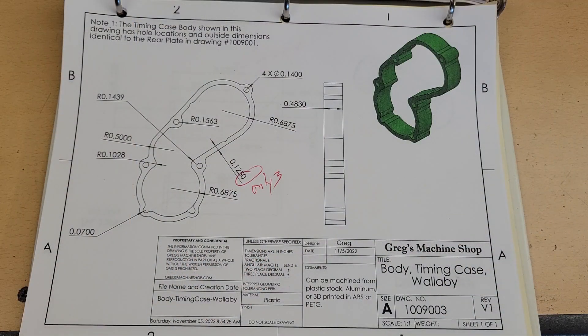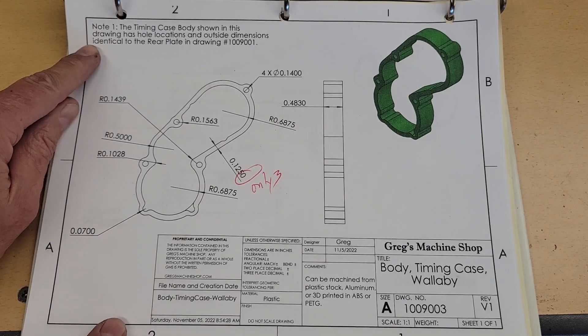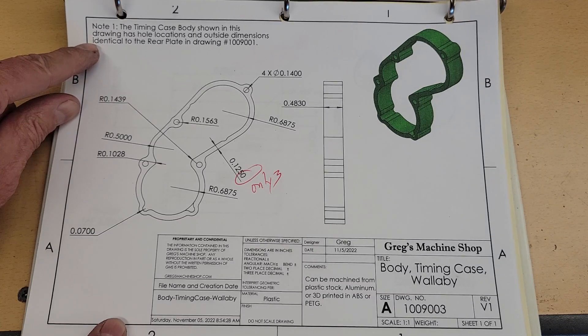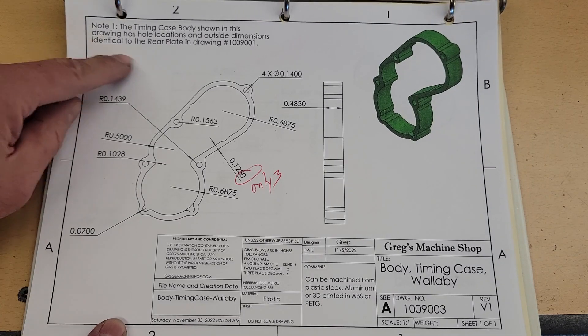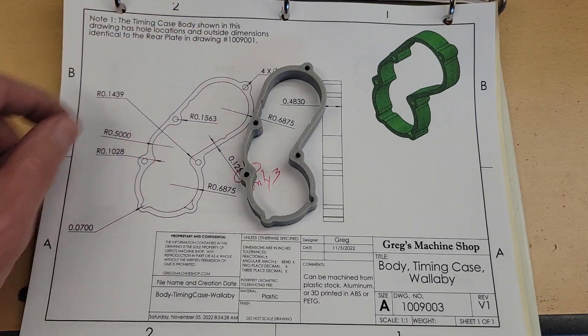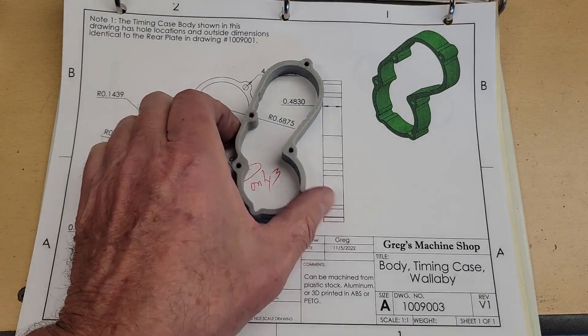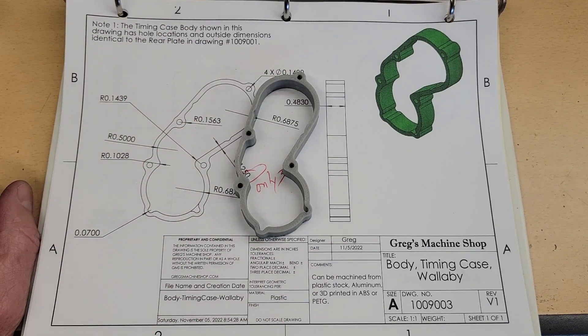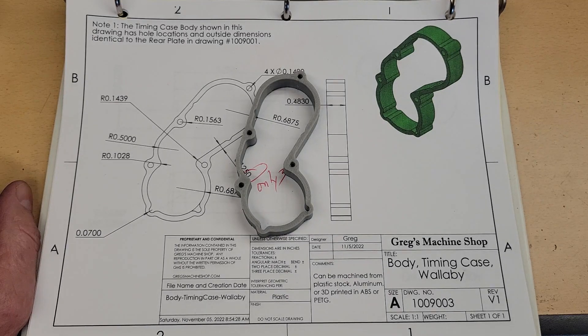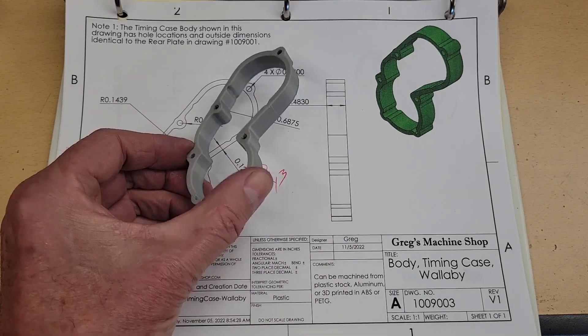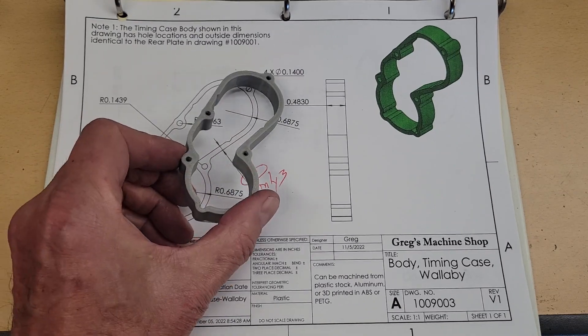Let's talk about the timing case body for our Wallaby engine. Looking at the drawing, you'll note the timing case body shown in this drawing has the hole locations and outside dimensions identical to the rear plate. What I did was, I 3D printed it. The STL file is included with the plans in the zip file. If you want to do the same, that really is the simplest way to do it.